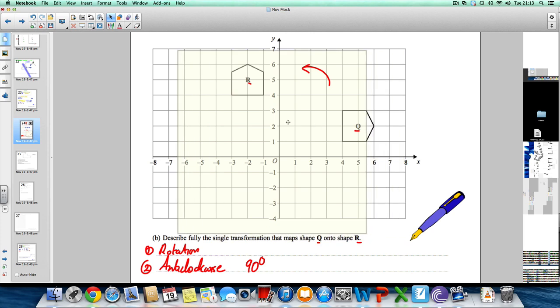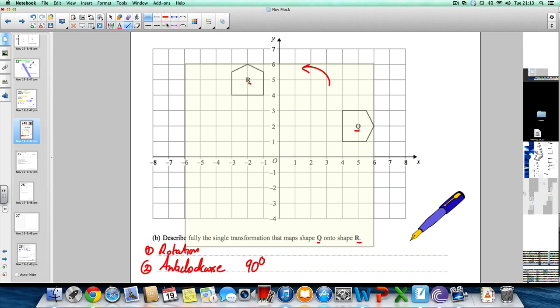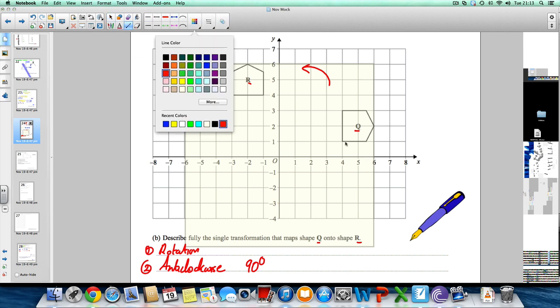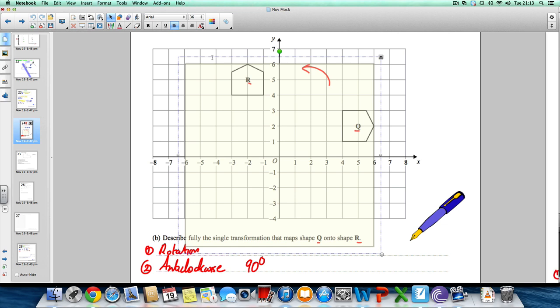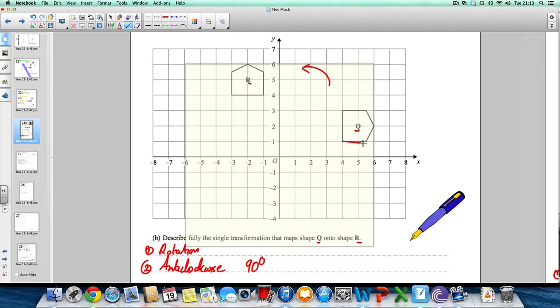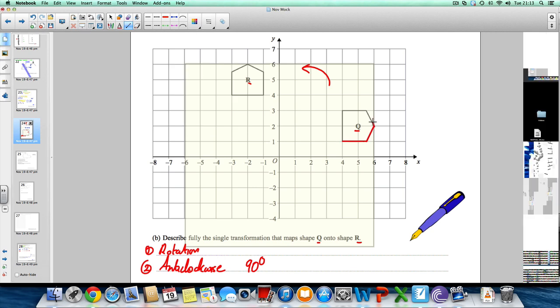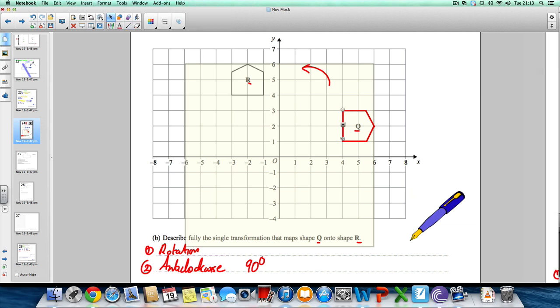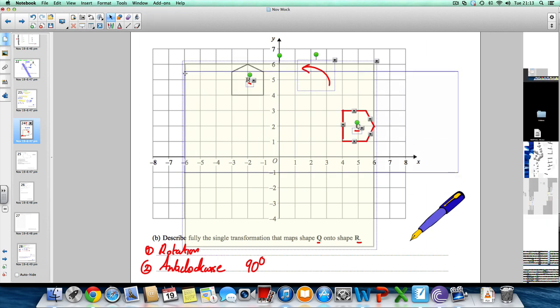You've got to try and find this using the tracing paper, using trial and error. What you're going to do is put your tracing paper over your shape and trace out your shape as follows. We're going to try and perform the rotation and see where the center is.